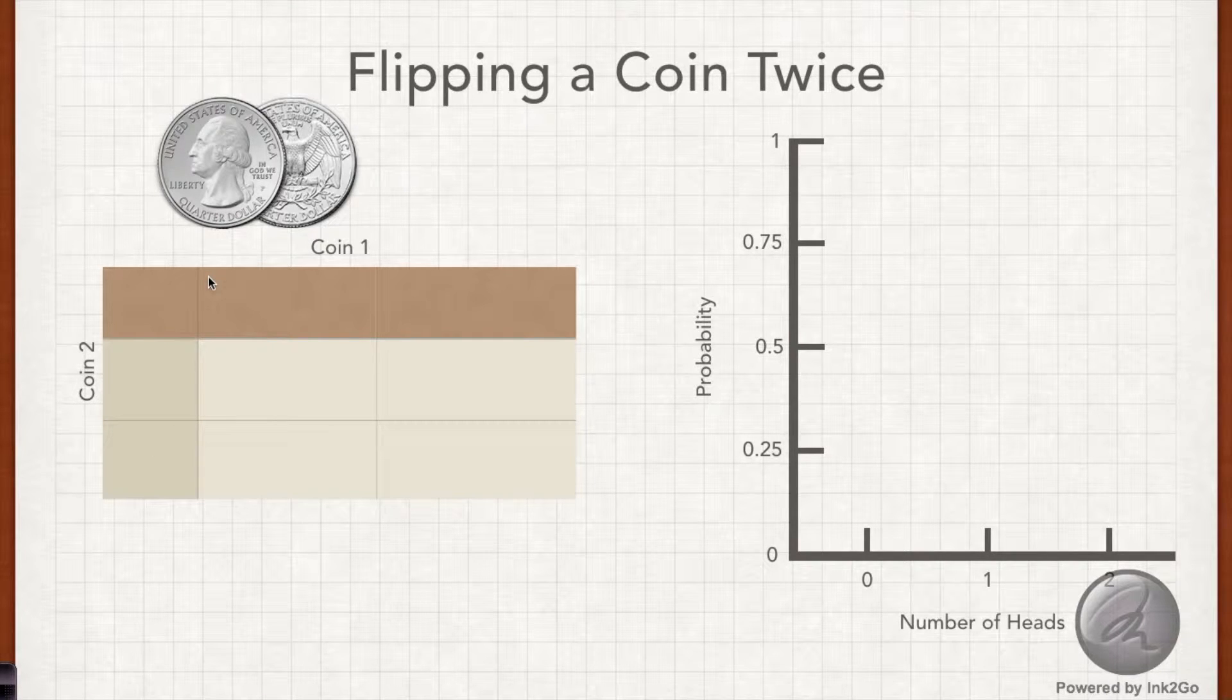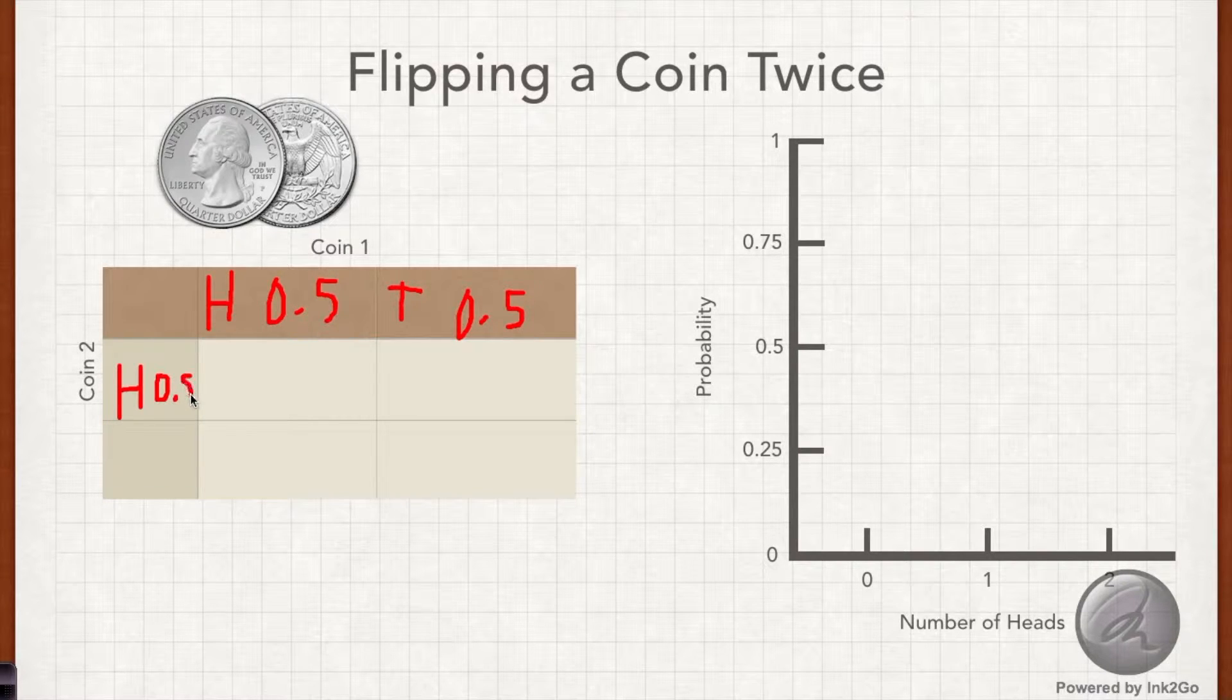So we know that the first coin can come up heads, and the probability of that is 50%, or 0.5 as a decimal. It can also come up tails, and the probability of that is also 0.5. And the second coin can do the same two things.